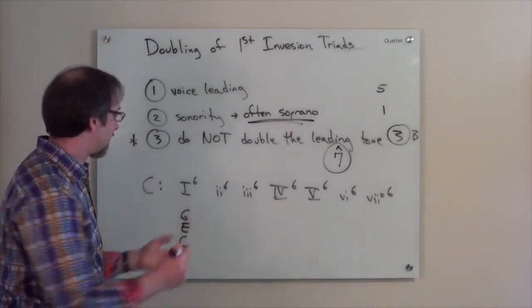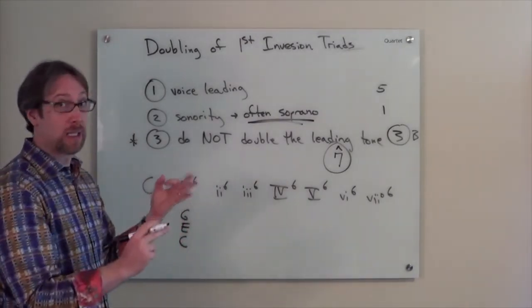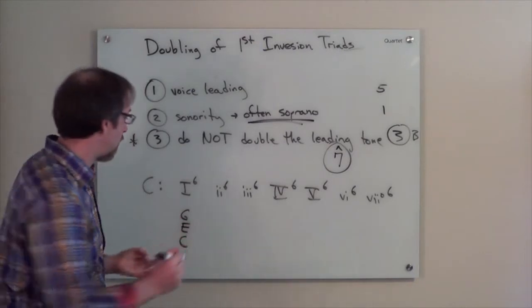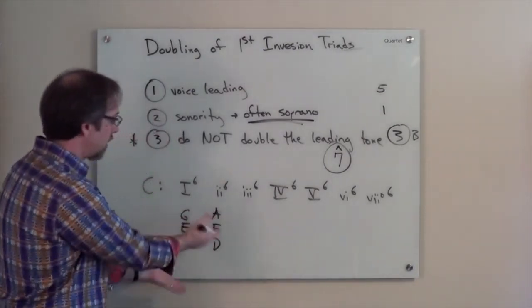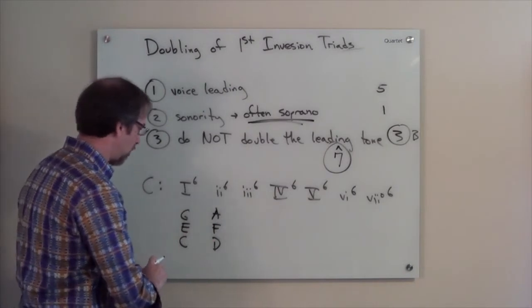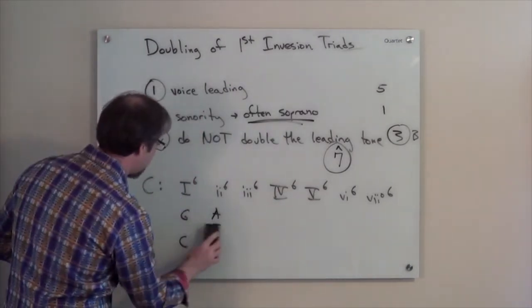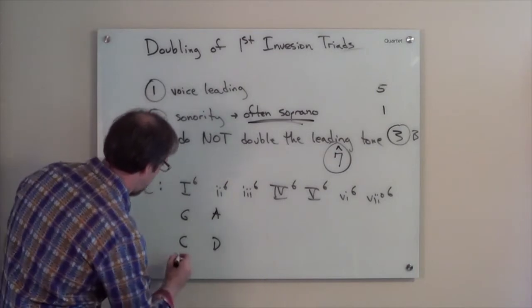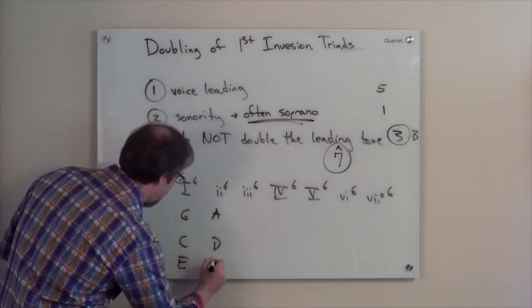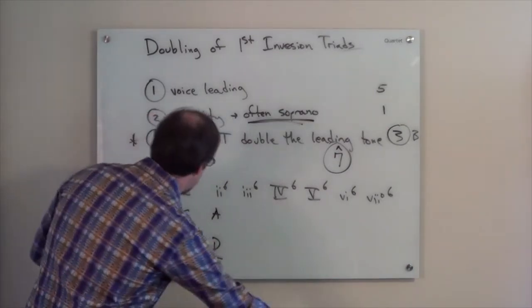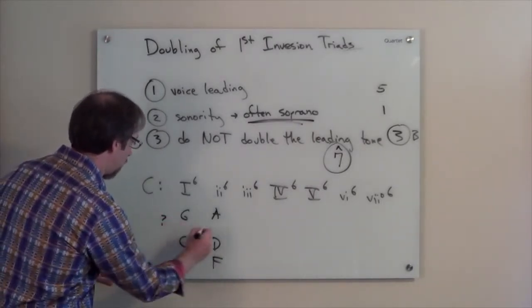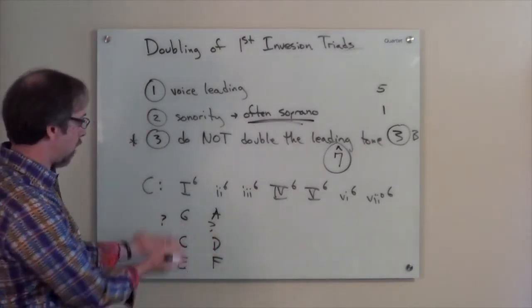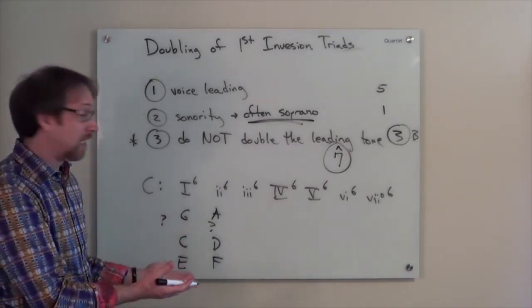The two chord has scale degrees two, four, and six. Also, no scale degree seven. So D, F, A. I can double any one of those notes. And I'm actually going to write it differently. I'm going to erase the third here as I write it here on this board. So you actually see that I now have, I can put any other note. It could be any one of those three pitches. Doesn't matter.